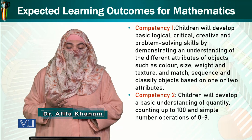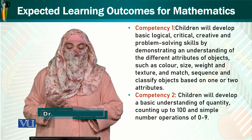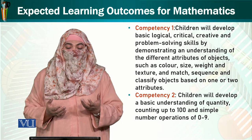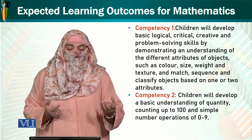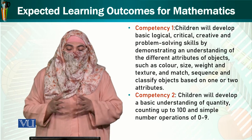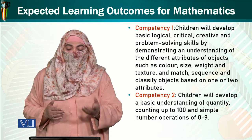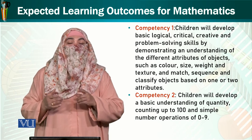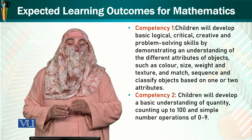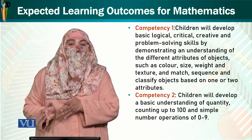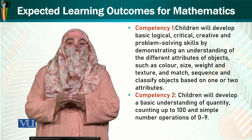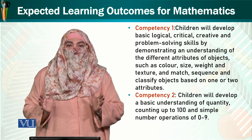Children will develop these skills by demonstrating an understanding of the different attributes of objects such as color, size, weight and texture, and match, sequence and classify objects based on one or two attributes. This competency is very important because they can know how the digits are, what their sequences are, and how they could be incorporated in real life situations.